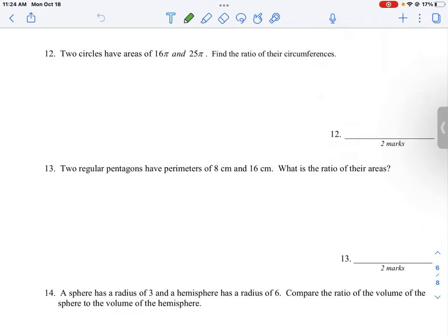Let's look at question number 12 where we're asked to find the ratio of the circumference of two circles, but we're given the areas instead. The areas are expressed in units of pi, 16π and 25π.